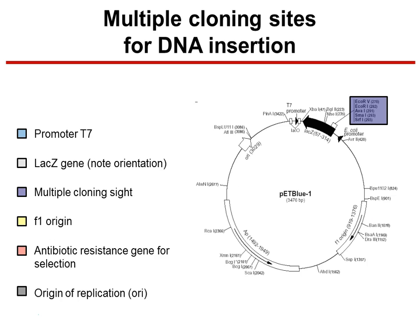The place where the gene is inserted is the multiple cloning site of our vector. A multiple cloning site has a number of locations that can be cut, and each one of these locations can be cut by a specific enzyme called a restriction enzyme.